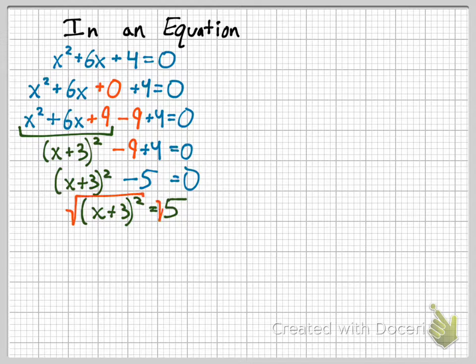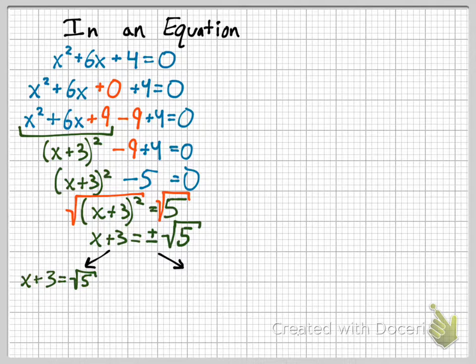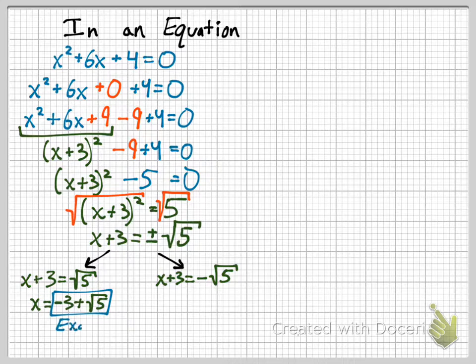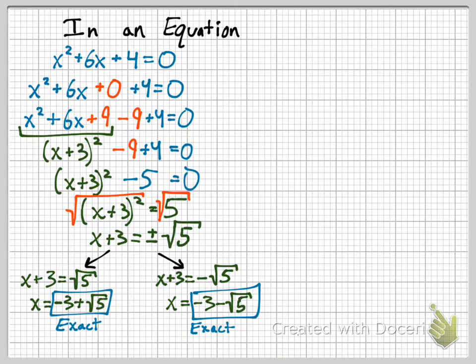When you set it equal to 0, you can move the 5 over, add 5 to both sides, and then when you square root, you have to remember the plus or minus. But you can change this into two equations: x plus 3 equals root 5, and x plus 3 equals negative root 5. And that gives us two solutions: negative 3 plus root 5, and that's an exact solution, and negative 3 minus root 5. And those exact solutions—this is the only way to get these exact solutions.